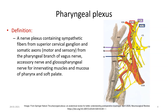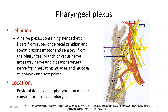The plexus also contains fibers from the accessory nerve and glossopharyngeal nerve. You can follow the branches from the 10th cranial nerve (vagus) and the glossopharyngeal nerve in the picture. Together they form a plexus in relation to the middle constrictor of the pharynx, so the location of the pharyngeal plexus is on the posterior wall of the pharynx.